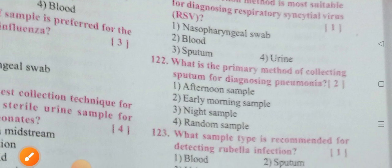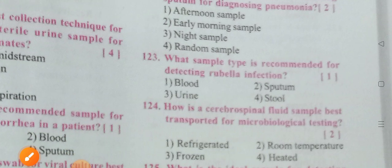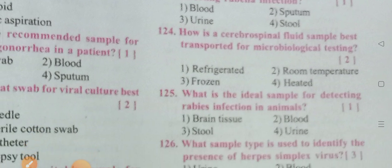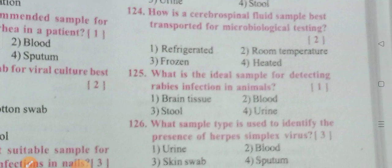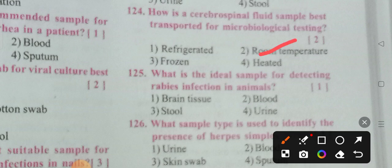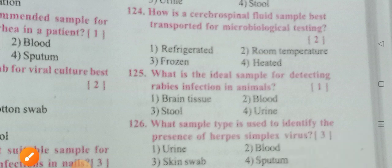What is the primary method for collecting sputum for diagnosing pneumonia? Option 2 is correct: early morning sample. What sample type is recommended for detecting rubella infections? Blood. For best sample transport for microbial testing, options are refrigerator, room temperature, frozen, or heat. Option 2 is the correct answer: room temperature. What is the ideal sample for detecting rabies infection in animals? Option 1 is the correct answer: brain tissue.